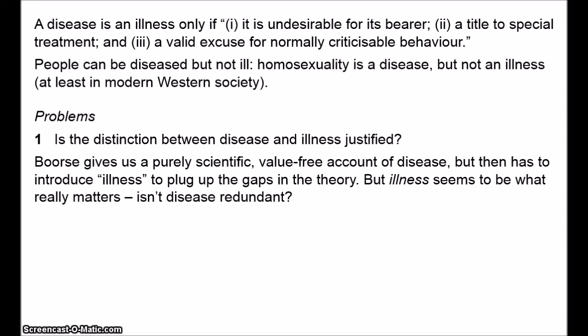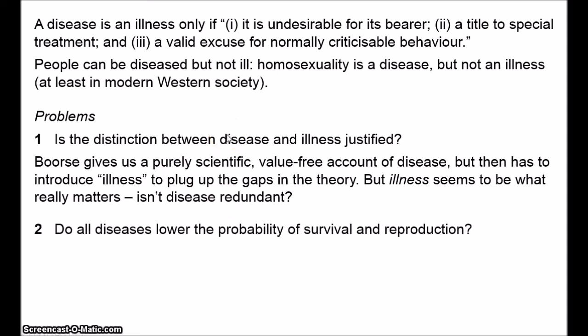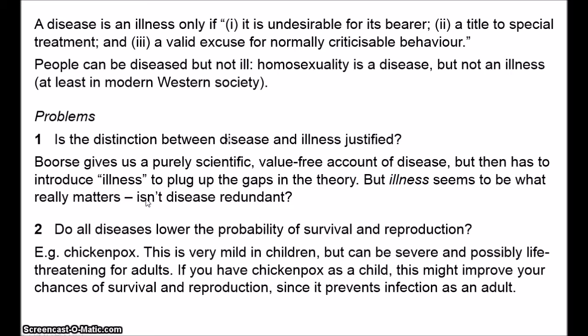Second difficulty: Boorse ties disease to survival and reproduction. But do all diseases lower the probability of survival? Consider something like chicken pox. If you get chicken pox once, you'll have a lifetime immunity to it. For children, chicken pox is a mild infection that very rarely has any significant complications. For adults, it's much more severe and can be life-threatening. So it's generally seen as quite a good thing when children get chicken pox — in the right context, chicken pox actually increases one's chance of survival and reproduction. But surely chicken pox is still a disease?